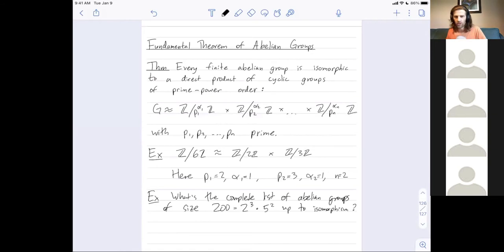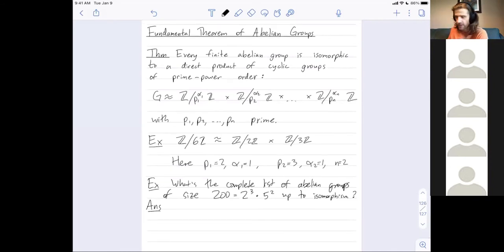Okay? So I want to give all of the abelian groups of size 200 up to isomorphism. So I only want to list, you know, groups that are not isomorphic to each other. Okay? And there's going to be six such isomorphism classes. There's six different groups up to isomorphism that are both abelian and of size 200.